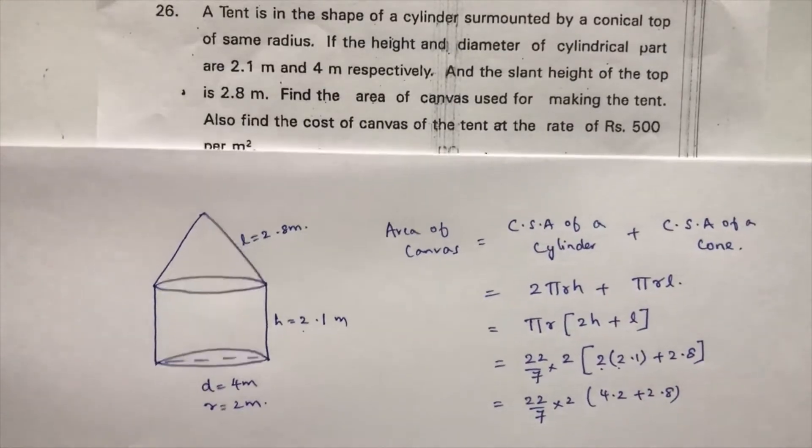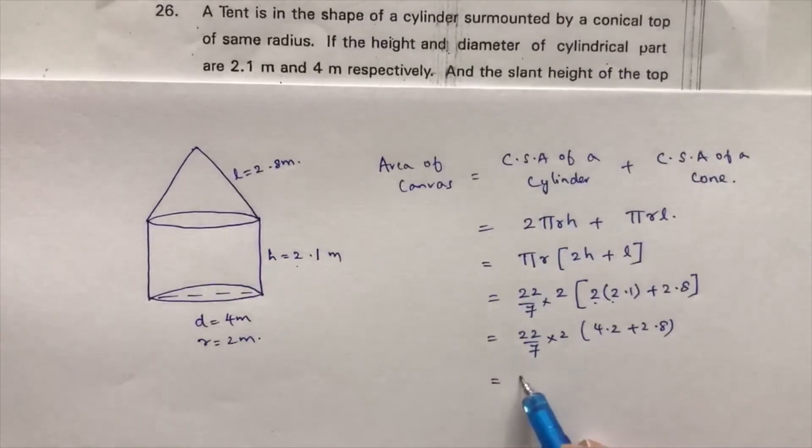Now one more step, if we simplify here 22/7 into 2 into 4.2 plus 2.8 is 7. 7 and 7 will get cancelled so the answer is 44 meter square. So area of the canvas is 44 meter square.